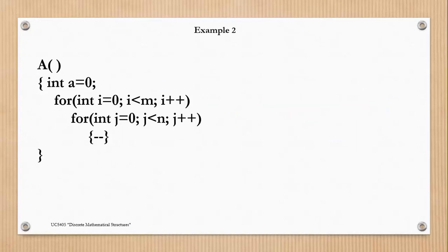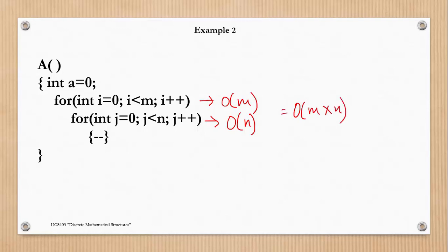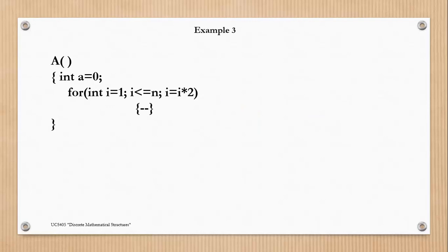Next, in this example we have two loops which are nested loops. In the previous example the loops were sequential, so we added their complexities, but now we will multiply them. The time complexity of the first loop is O(m) because it runs m times. Similarly the time complexity of the second loop is O(n), so the time complexity of the algorithm is O(m × n).